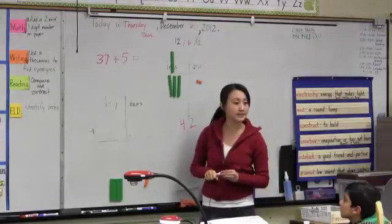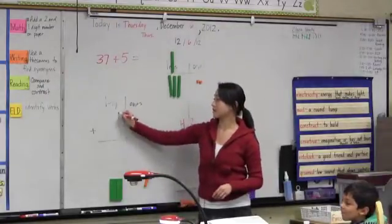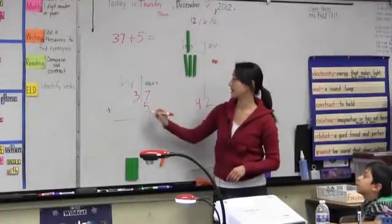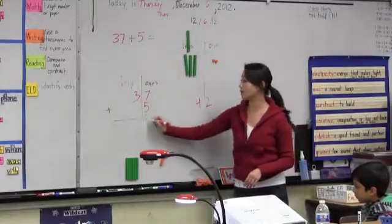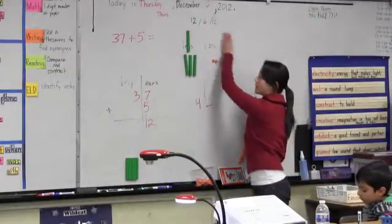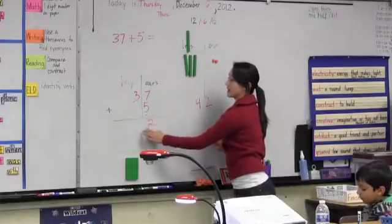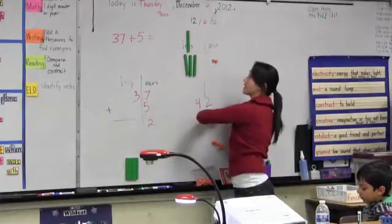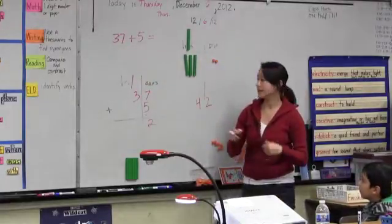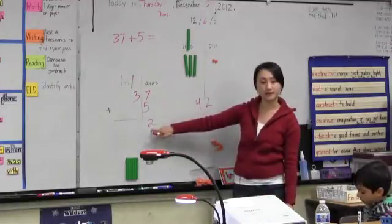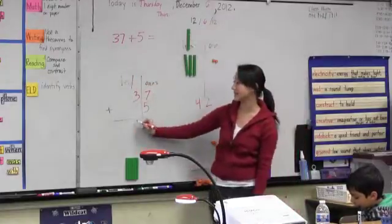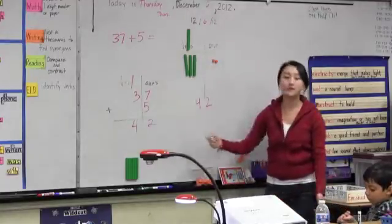On paper it would look like this. I'm going to write the problem in the right place value — three tens, seven ones, plus five. Five goes in the ones place. Seven ones plus five ones was twelve ones. But can we put twelve ones in the ones place? No, we had to regroup and trade it for a ten. That one ten is now over here in the tens place — I show that by putting that one ten right there. Now I have two ones left. Then I have to add the tens: three tens plus one ten is four tens. So my answer is forty-two.